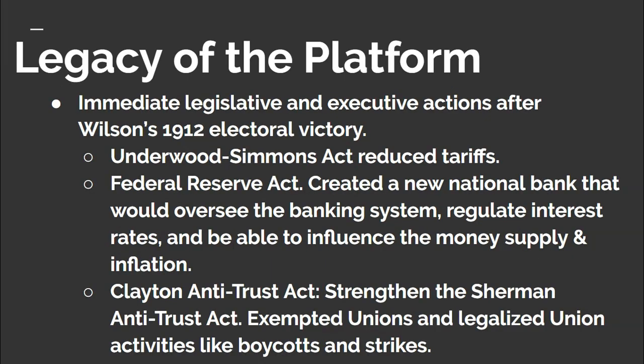Wilson went on to win the election in 1912, and many of his progressive ideas turned into legislative action. First, tariffs were reduced under the Underwood-Simmons Act. Second, the Federal Reserve Act created a new national banking system that would oversee private banks, regulate interest rates, and be able to influence the money supply and inflation. Third, the Clayton Antitrust Act was passed, which strengthened the Sherman Antitrust Act, exempted unions, and legalized union activities like boycotts and strikes. There were also a number of other reforms, including banning child labor, rules on working hours, and support for amendments that increased democracy, including the direct election of senators and women's right to vote.